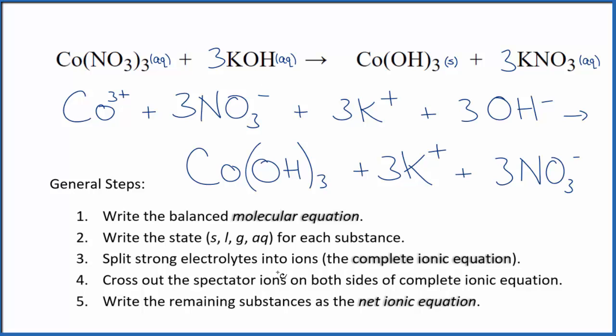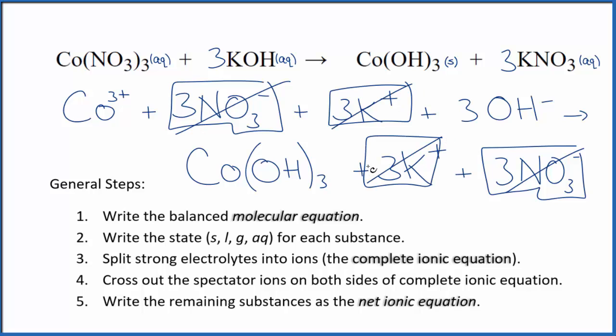Now we can cross out spectator ions. They're on both sides of this complete ionic equation. I can see in the reactants here, I have these three nitrate ions. And in the products, I also have three nitrate ions. So I can cross those out. Those are spectator ions. I also have three potassium ions in the reactants and the products. Cross them out. Spectator ions.